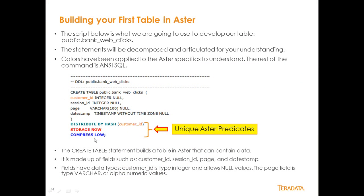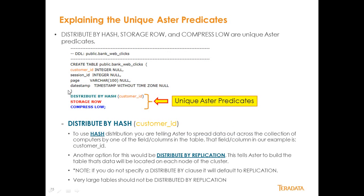This is the data definition language, or DDL, that you use to build a table. If you're familiar with SQL, you're familiar with how this looks. It's CREATE TABLE public.bank_web_clicks, made up of columns: customer_id (integer null), session_id (integer null), page (varchar 100), and date_timestamp. This simulates clicks on a bank's web page. There are three unique predicates in Astro: distribute, row, and compress, which we'll go through individually.